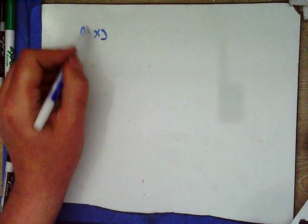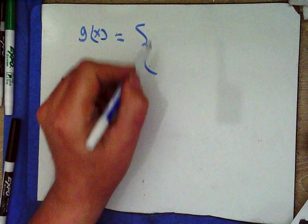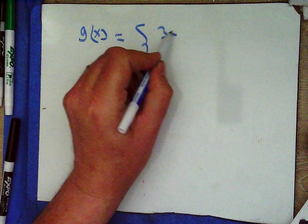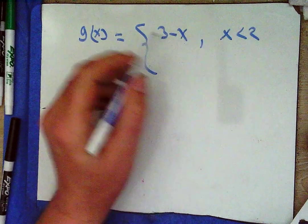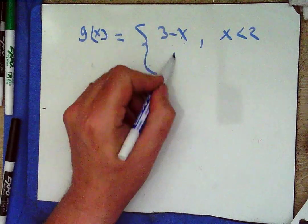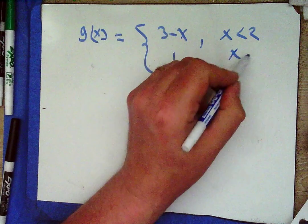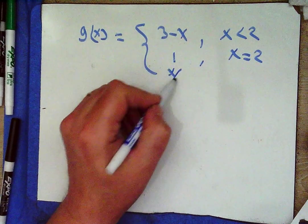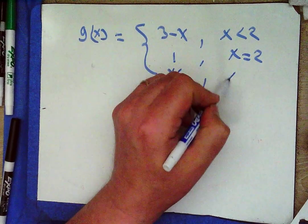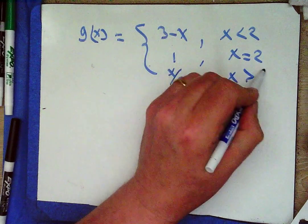Now let's look at this example. g of x equals: 3 minus x for x less than 2; 1 for x equal to 2; and x over 2 for x greater than 2. I recommend pausing to graph g of x before answering the questions.